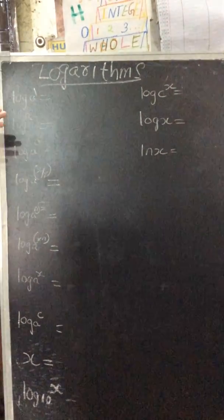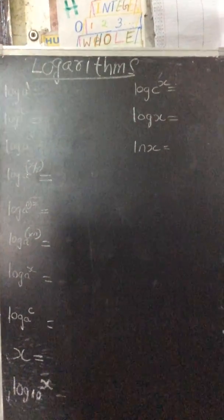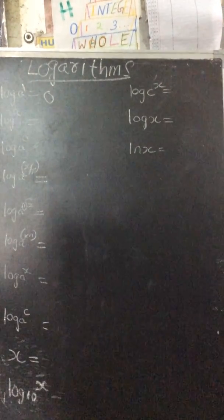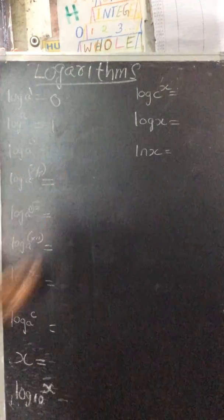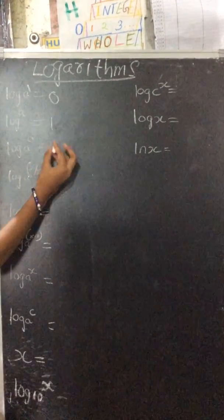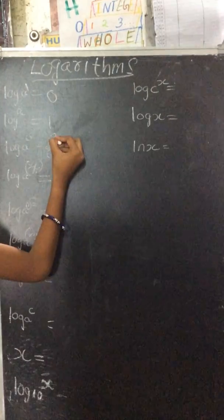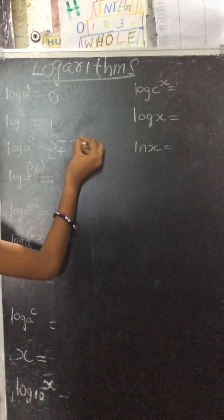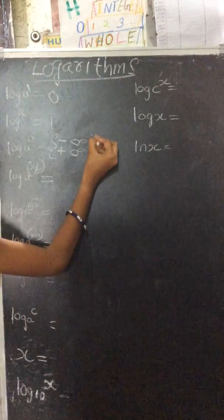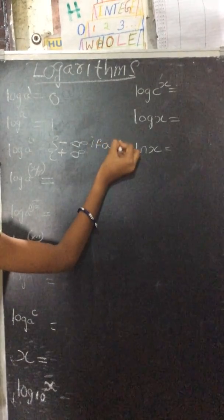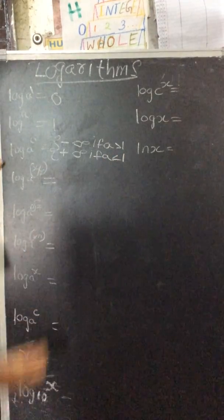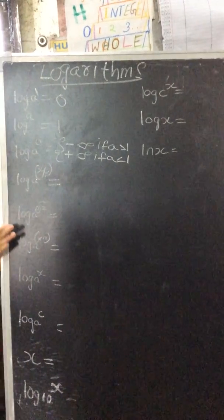Logarithms: log_a(1) = 0, log_a(a) = 1, log_a(0) is minus infinity if a > 1, plus infinity if a < 1.